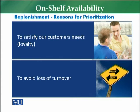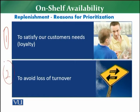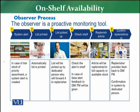You need to understand the reasons for prioritization — why a retail store gives prioritization to these articles. First, to satisfy customer needs and develop and build customer loyalty. Second, to avoid customer loss of sales and loss of turnover — because these are key articles. If the customer does not find them, the store will lose turnover and not get healthy sales from those articles.